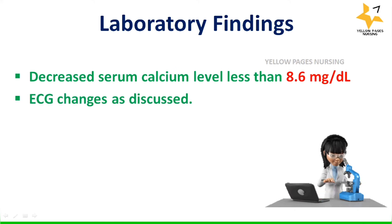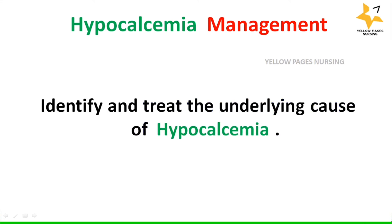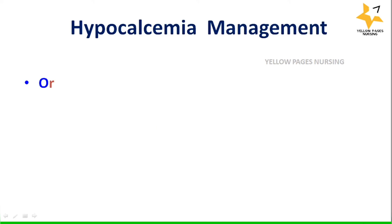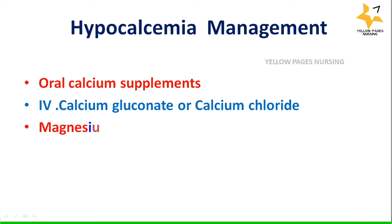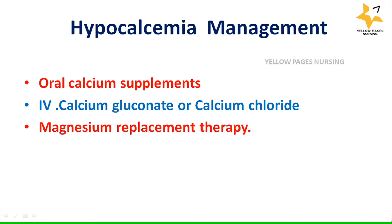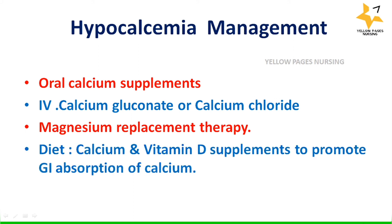Management of hypocalcemia depends on identifying and treating the underlying cause. General management includes oral calcium supplements and administration of intravenous calcium gluconate or calcium chloride — calcium chloride is generally advised for patients in cardiac arrest. Magnesium replacement therapy is also important, as a low magnesium level must be corrected before IV calcium can increase serum calcium levels. Diet includes calcium and vitamin D supplements to promote gastrointestinal absorption of calcium. It is essential to check the phosphate level, as high phosphate prevents calcium absorption.